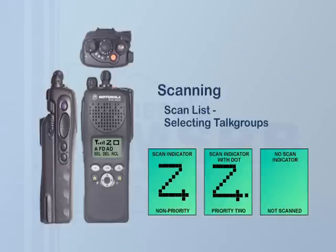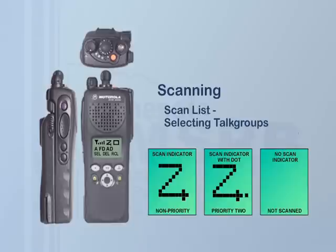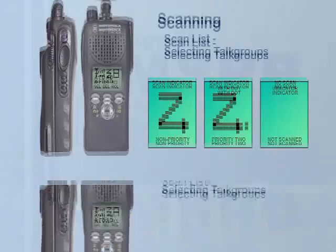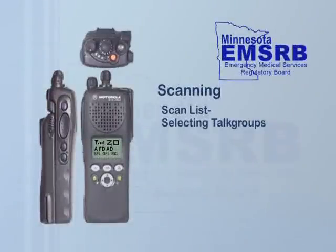Each press of the SEL menu select button causes one of the following icons to appear: a scan indicator, which means the talk group is a non-priority scan list member; a scan indicator with a dot, which means the talk group is Priority 2; or no scan indicator, meaning the talk group is not a member of the scan list. Continue to add or delete talk groups as needed. A maximum of 10 talk groups can be added to the scan list.